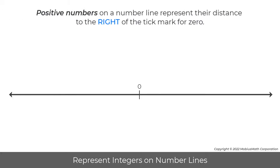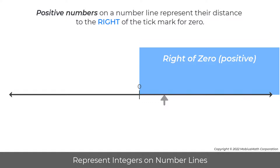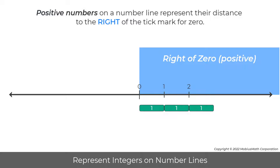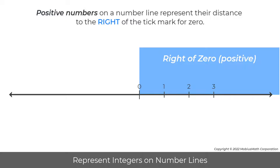Positive numbers on a number line represent their distance to the right of the tick mark for zero. For example, a bar to the right of zero with a length of one measures the distance from zero to one on the number line. Two of these bars measure the distance from zero to two. Three of these bars measure the distance from zero to three. A positive number can be represented by an arrow that measures from zero to that number and points in the positive direction, which is to the right.